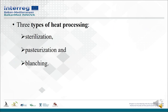There are three types of heat processing: sterilization, pasteurization, and bleaching. The heating method may be achieved through conventional heating, in the case of application of water or steam, or can be achieved by ohmic heating, microwaves, etc.